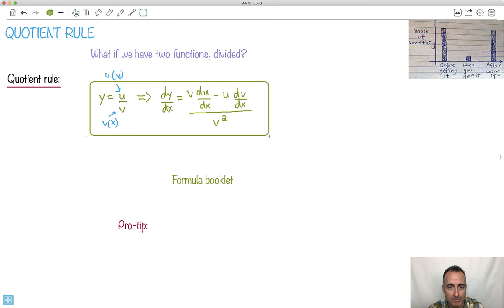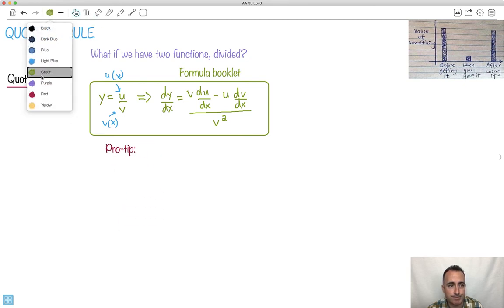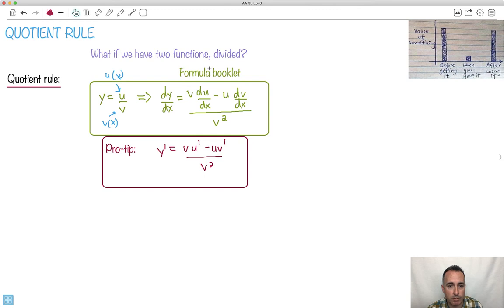But I just want to show you, this is totally doable here. Now, you get this on your formula booklet, which is good. And I want to show you maybe a little pro-tip here to help you out. A way to decipher what to do here, I like to write it like this. I like to say y' equals v u' minus u v' all that over v squared. I think this one looks a little bit simpler, doesn't it?